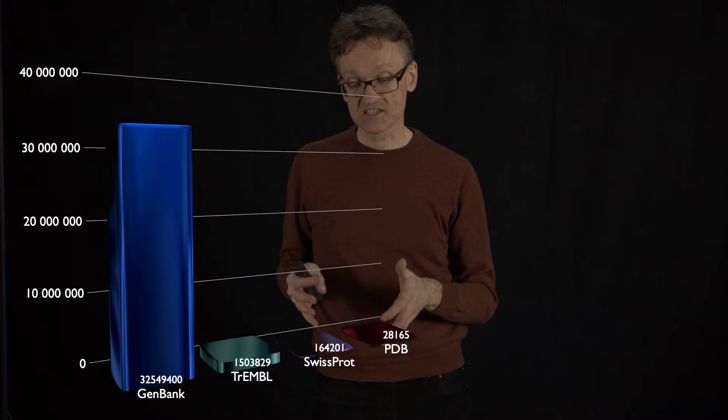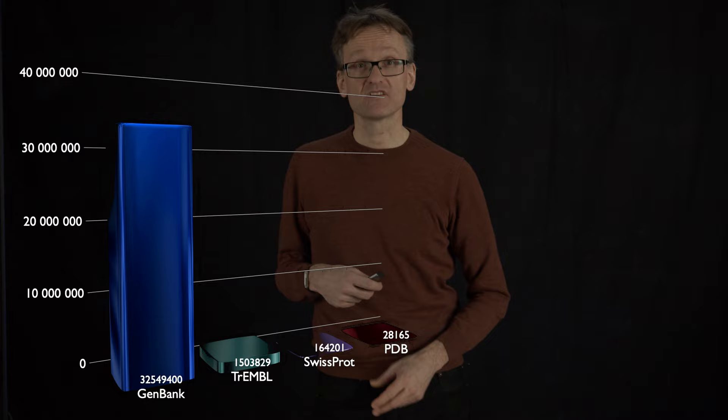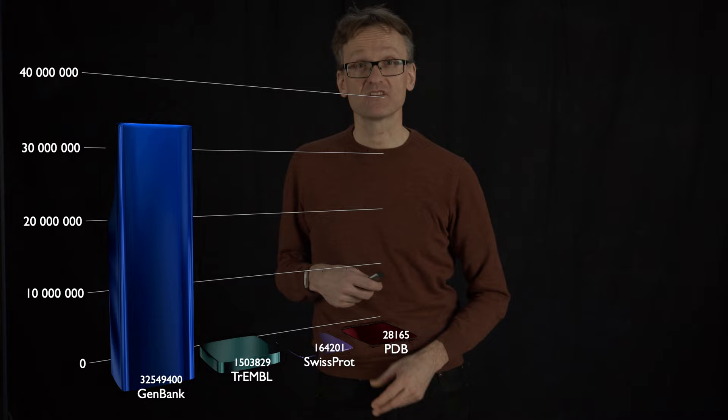SwissProt at the time, which is now called UniProt, has more annotated sequences that we know a little bit about, and we've tried to clean out more of the junk. It had almost 200,000 sequences.